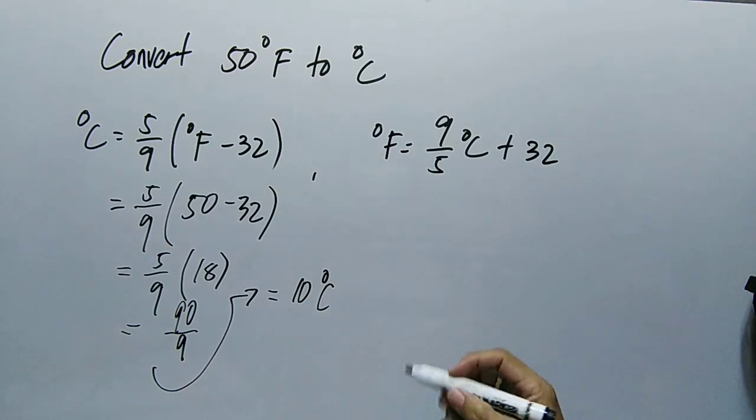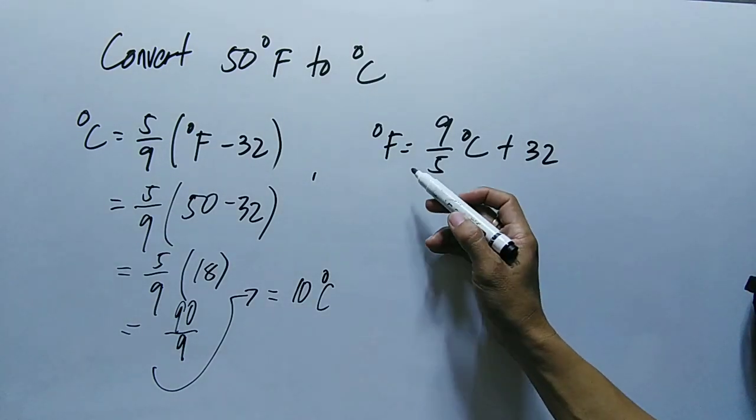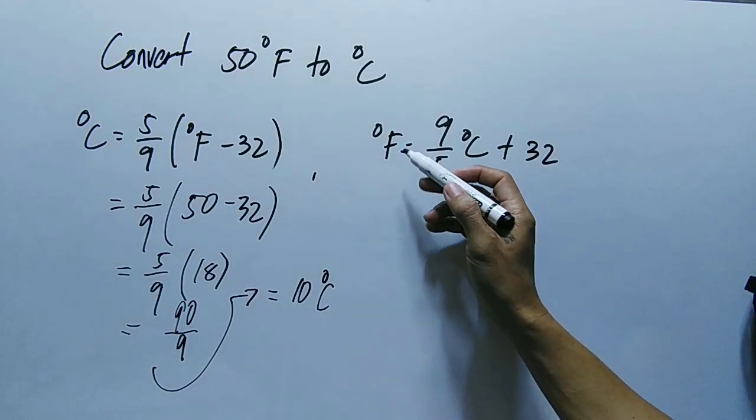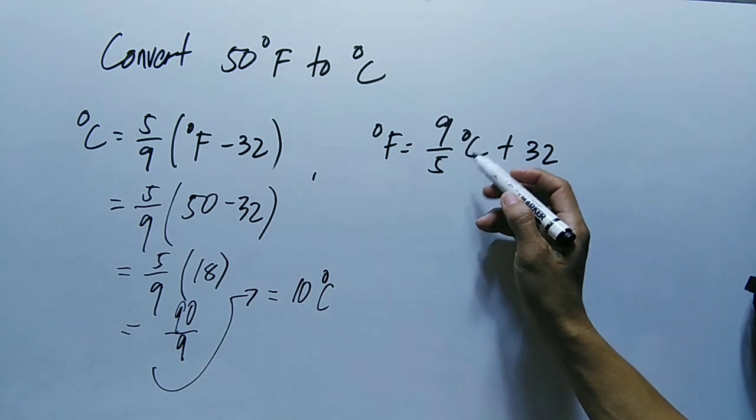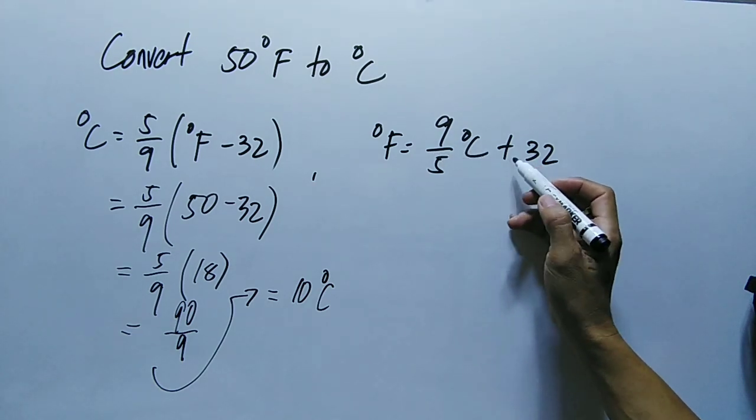So to check this, we have to use this formula: degree Fahrenheit equals 9 over 5 times degree Celsius plus 32.